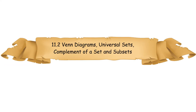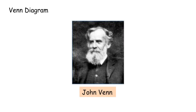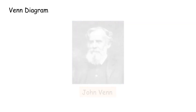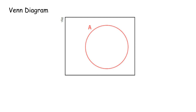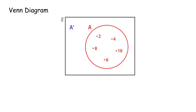11.2 Venn Diagrams, Universal Sets, Complement of a Set, and Subsets. Represent the Universal Set and Complement of a Set using a Venn Diagram. The Venn Diagram is named after John Venn, who invented this diagram. The Universal Set is represented by a rectangle. Set A is represented by a circle, and all elements of Set A are written inside the circle. Each dot represents an element. The elements of the Complement of Set A (A') lie outside the circle.